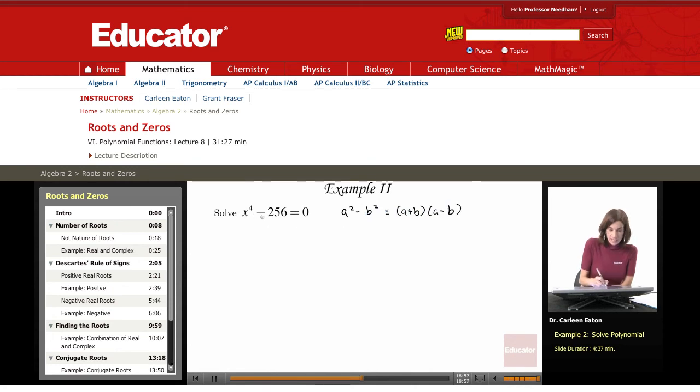And if you look at it and think about it this way, x squared squared is x to the fourth. And if you look at this one, 256, and take the square root of that, it's actually 16. So if you look at 256 and take the square root, therefore this is telling me that a equals x squared and b equals 16.